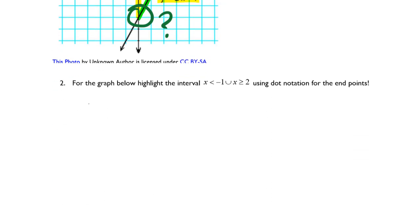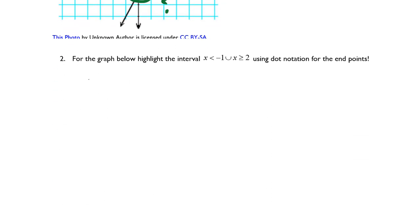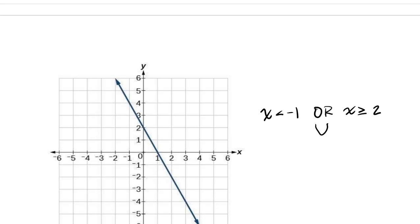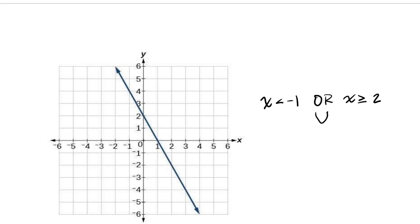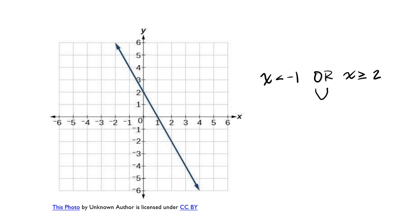We also need to graph below the highlighted interval where x is less than negative 1 or x is greater than or equal to 2. So that being said, we're going to highlight those intervals on the x-axis, the horizontal axis. We're going to do that first before we worry about the line.